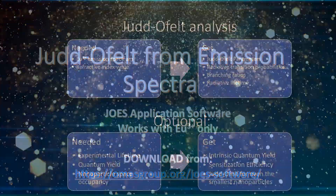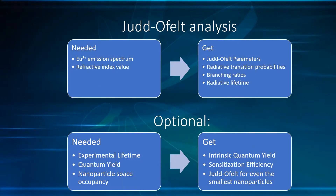For the complete Judd-Ofelt analysis, what is needed is a single emission spectrum and the refractive index value to get the Judd-Ofelt intensity parameters, radiative transition probabilities, branching ratios, and radiative lifetime.